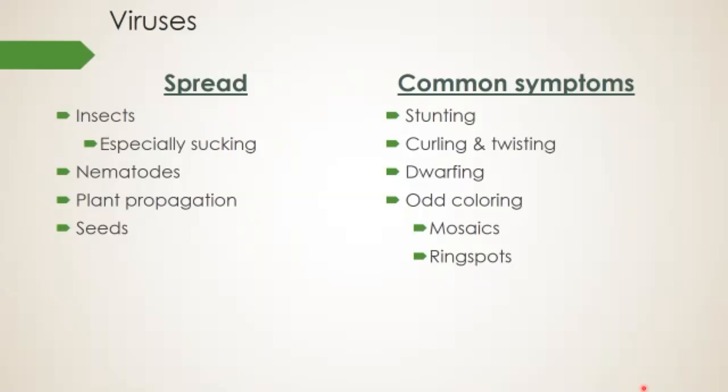The only control for most viruses is cultural control, which we'll talk about with IPM. The best way to avoid viruses is, number one, using sterile and clean propagation practices, and number two, using cultivars or varieties of plants that have genetically bred resistance to those kinds of diseases.